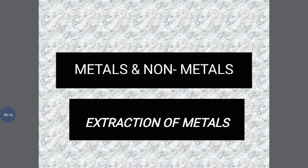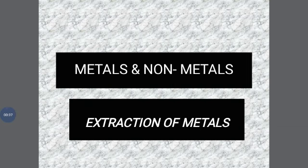We know the earth's crust is the major source of metals. The elements or compounds which occur naturally in the earth's crust are known as minerals. At some places, minerals contain a very high percentage of a particular metal that can be extracted profitably — those minerals are known as ores.